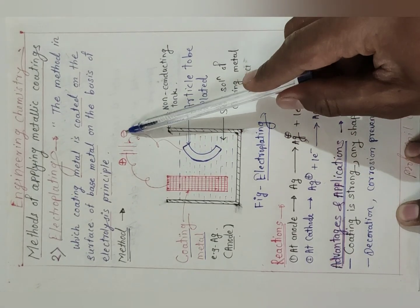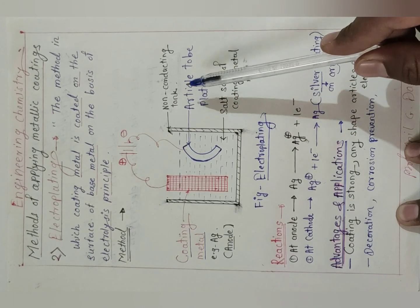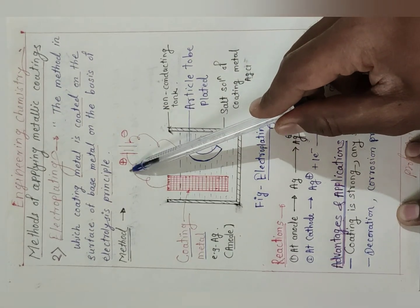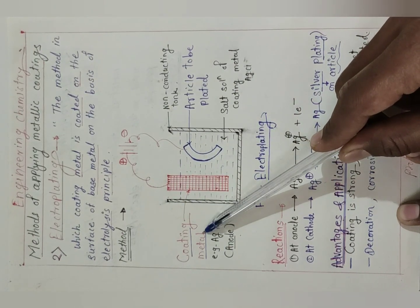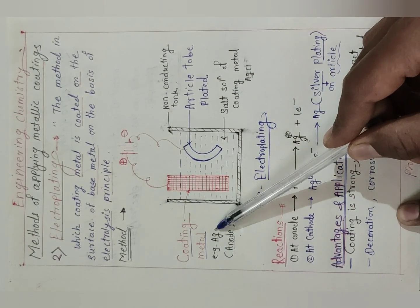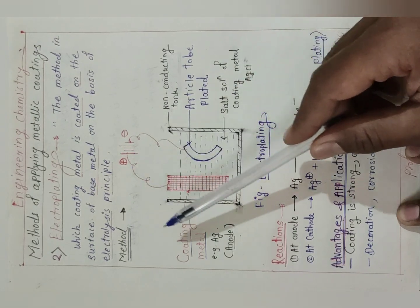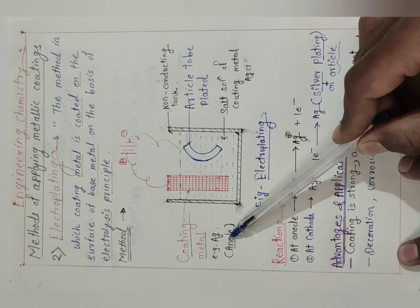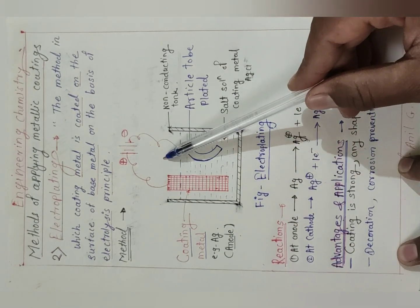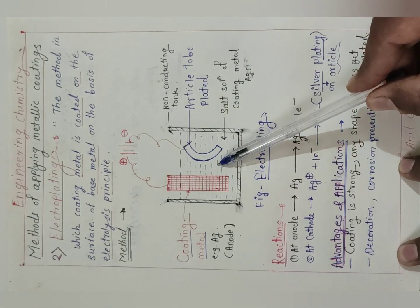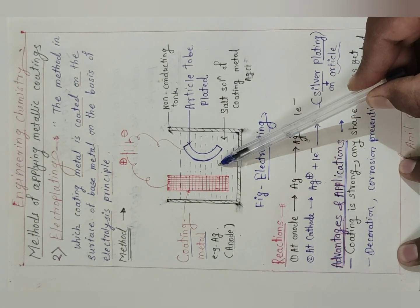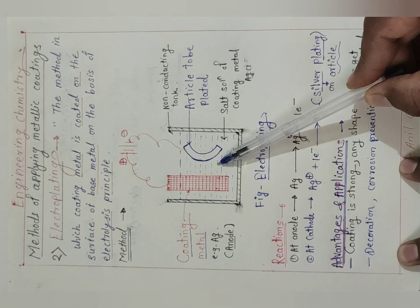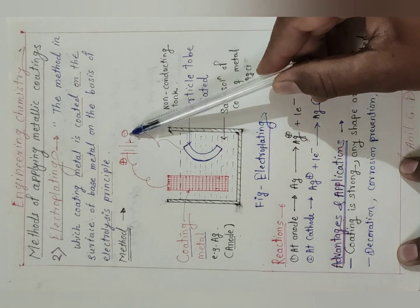The article is connected to the negative terminal of the battery, so this article acts as a cathode. While the positive terminal is connected to the coating metal — here the coating metal is silver — and as it is connected to the positive terminal, this coating metal acts as an anode. Now when current is passed and a suitable pH is maintained, the electrolysis process starts.